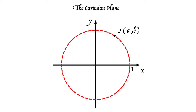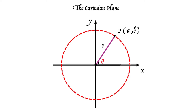To locate P, we can take a radius from the origin to the point (1, 0), rotate it until it hits the point P, and measure that angle theta. We can ask: what's the relationship between the coordinates a and b and that angle of rotation theta? In this green triangle, cos theta is a over 1 and sin theta is b over 1. So the x coordinate a is cos theta and the y coordinate b is sin theta. That's true of every point on this unit circle.